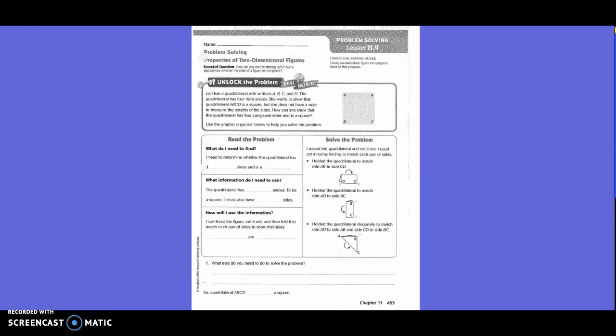Use the graphic organizer below to help you solve the problem. Then we're going to pretend like we have a paper and fold it and find our answer. So what do I need to find? I need to determine whether the quadrilateral has four congruent sides and is a square.